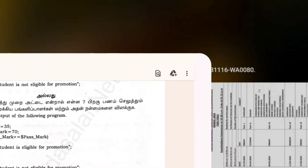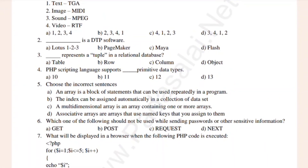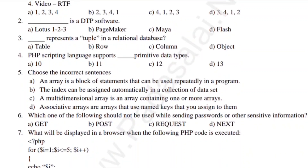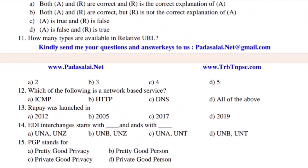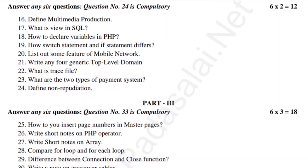Let's look at the 3×2 and 1×10 mark structure. Questions include: define reputation, define multimedia production, what is a view in SQL, how to declare variables in PHP, how switch statement and if statement differ, and list the various layers of EDI.